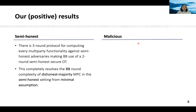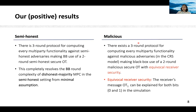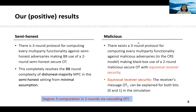This completely resolves the black box round complexity of dishonest majority MPC in the semi-honest setting from minimal assumption. In the malicious setting, we prove a similar statement, albeit in the presence of a common reference string and also with a malicious secure oblivious transfer that satisfies an additional property called equivocal receiver security, by which we mean that the receiver's message OT1 can be explained for both bits 0 and 1 in the simulation. At the heart of both our constructions is our ability to compute degree-3 functions in two rounds via cascading OTs.